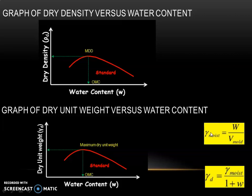γ_moist is found using W divided by V, where W is the weight of the soil sample — that is, mass multiplied by acceleration due to gravity (M × g) — and volume of the mold is known. Using γ_moist, we find γD, which is plotted on the Y-axis.